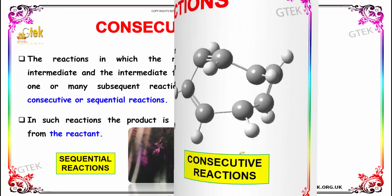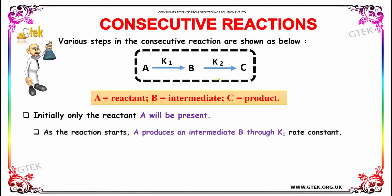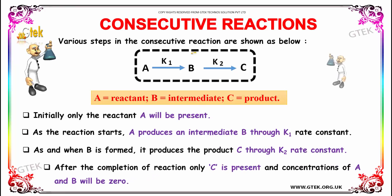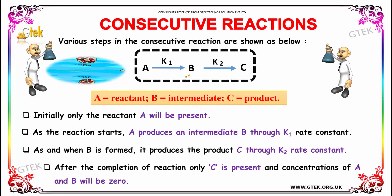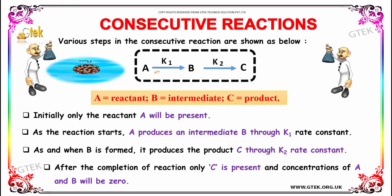Various types of consecutive reactions are shown. A will give B, and B will give C. A will give B with K1 as the rate constant, and B will give C with K2 as the rate constant. A is the reactant, B is the intermediate, and C is the product.